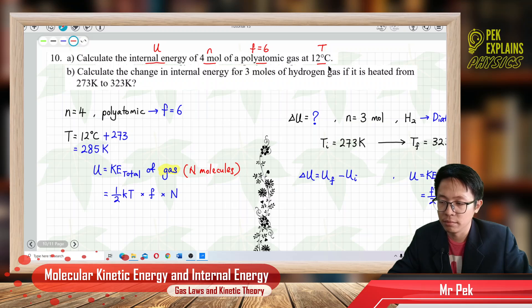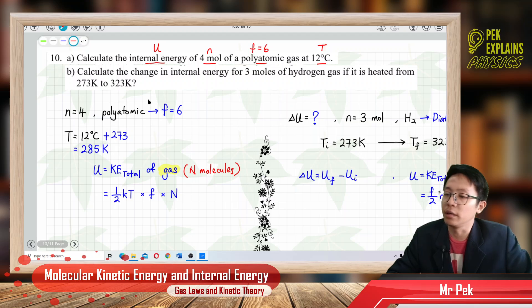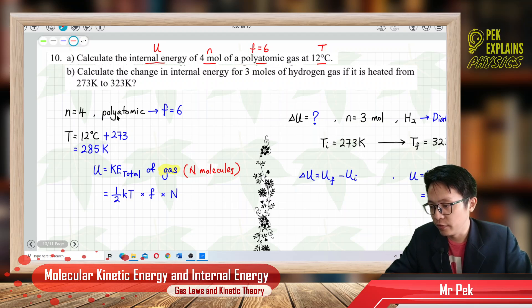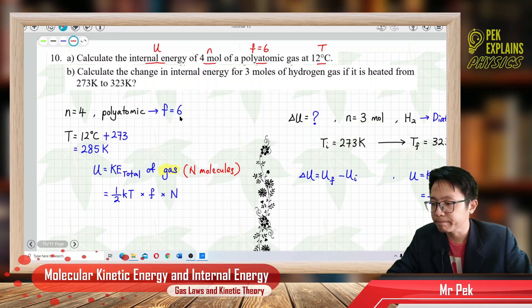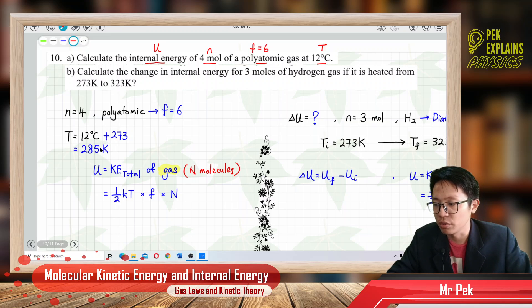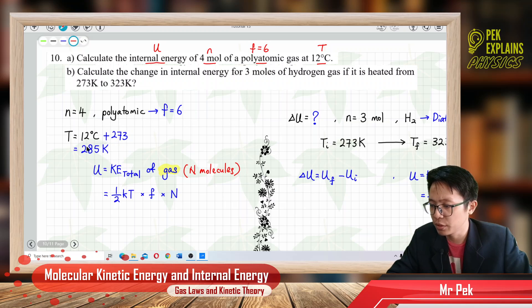Make sure everything is in SI units before you substitute into the equation. Temperature in degrees Celsius needs to change to Kelvin. So the number of moles is 4, polyatomic gas has 6 degrees of freedom, and the temperature is 12 degrees Celsius. You must change to SI units first, so plus 273. You get 285 Kelvin.